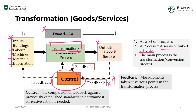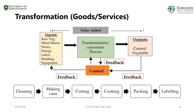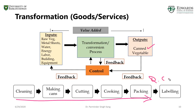Here's an example of a transformation process for canned vegetables. You can see a set of activities you go through in order to produce canned vegetables: cleaning, making cans, cutting the vegetables, cooking, packaging, and labeling. There may also be some quality control steps to ensure the right quality is produced. At each of these stages you may have a feedback mechanism where you're collecting data about these processes.